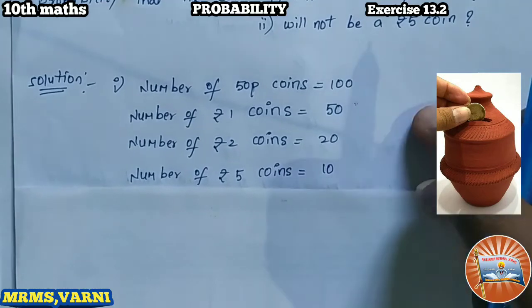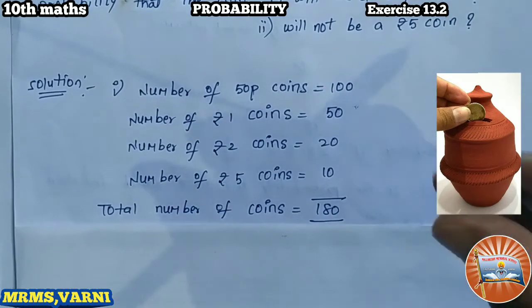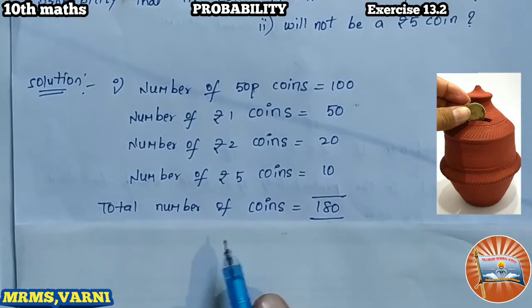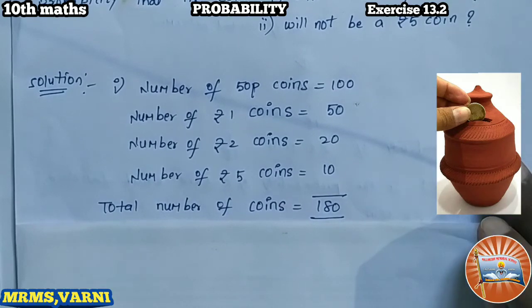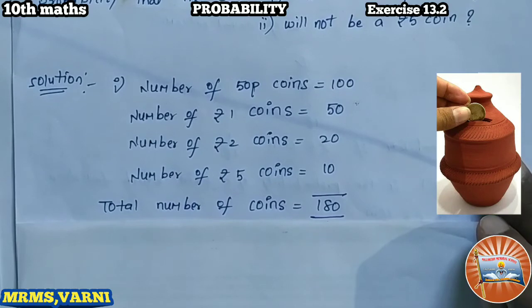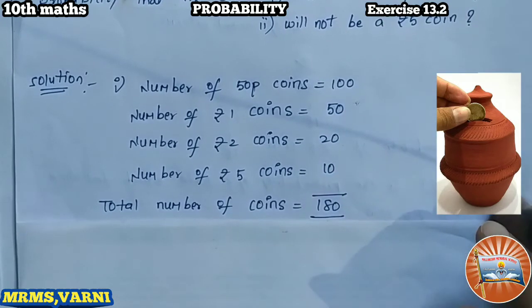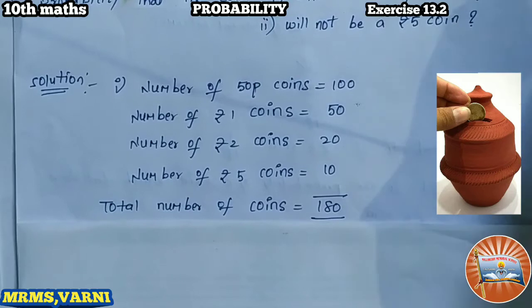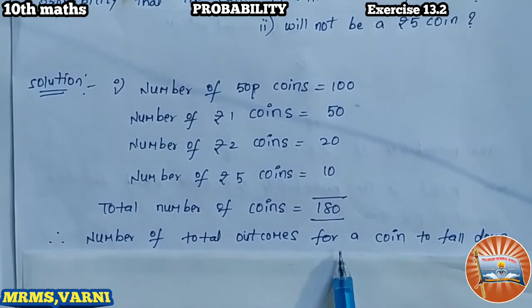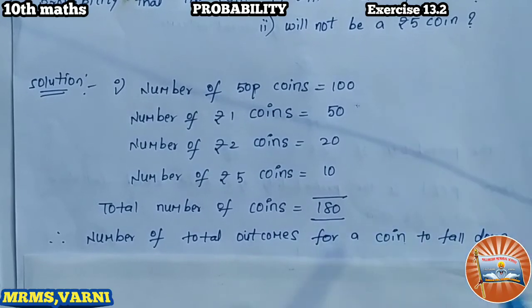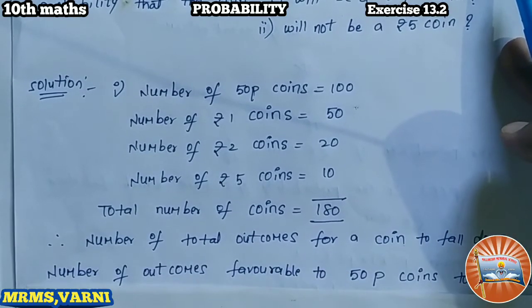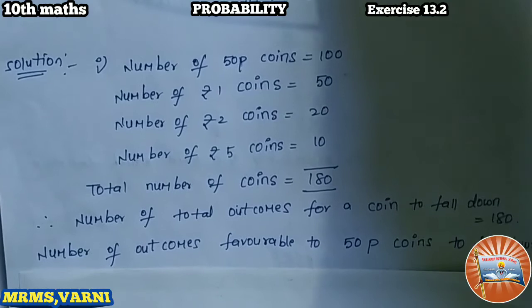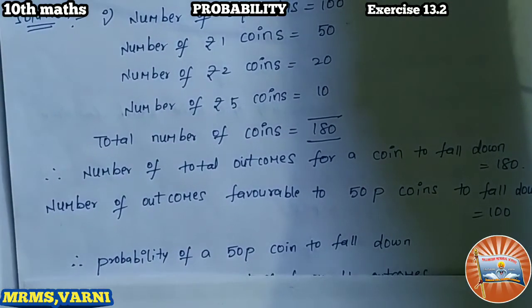The total number of coins — not the value, but the total count — is 180 coins. The number of outcomes favorable to a 50 paisa coin falling down is 100, since we have 100 fifty-paisa coins. The total number of possible outcomes for a coin to fall down is 180.